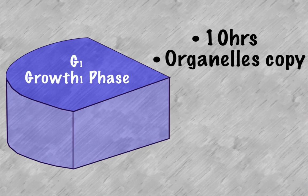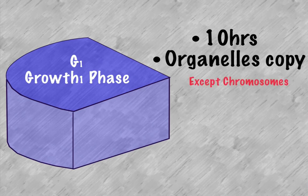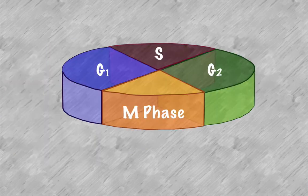The first one is the G1 growth phase which takes about 10 hours. This phase copies all the different organelles that a cell has. When it copies itself, it needs to copy every aspect. It's kind of like when your class is reading a book—you need to make sure each copy has the same information. In growth one phase, everything is copied in terms of the organelles except chromosomes, so the DNA is not copied yet.